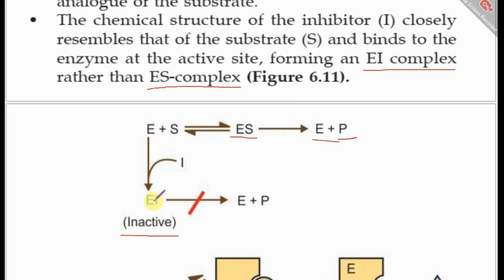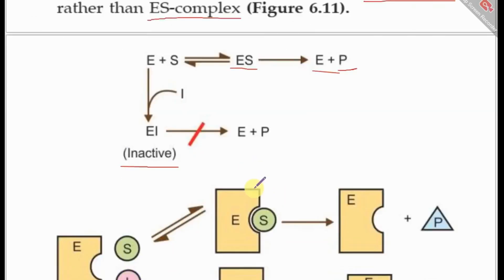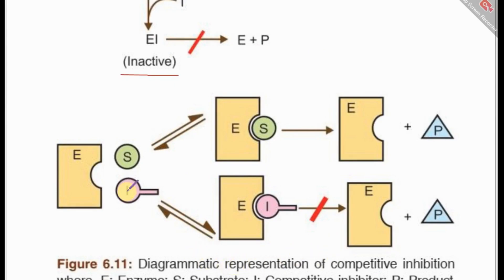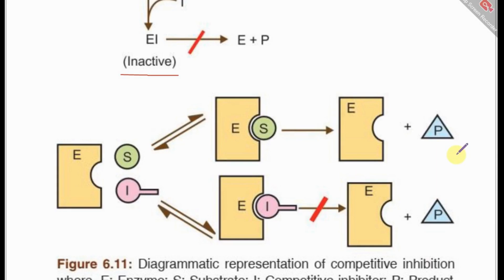In this diagram, E represents the enzyme, S the substrate, and I the inhibitor. The substrate and the inhibitor are structurally related and compete for the same active site. If the substrate outcompetes the inhibitor, it forms the enzyme-substrate complex, which undergoes catalysis to release a free enzyme and the product. If the inhibitor outcompetes the substrate, it leads to an inactive enzyme-inhibitor complex with no catalytic activity.